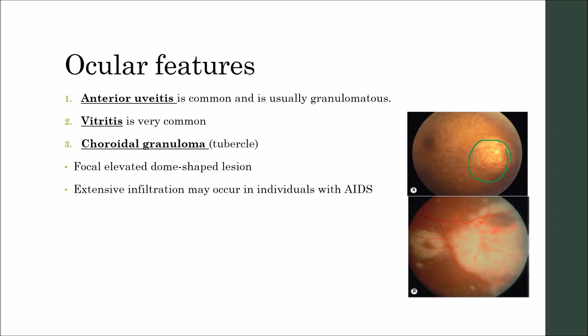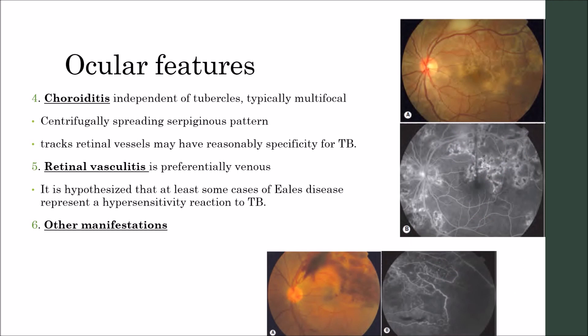Extensive infiltration may occur in individuals with AIDS. A large abscess-like tubercle is termed a tuberculoma. In this figure there is extensive infiltration, which might be seen in a patient with acquired immune deficiency syndrome.